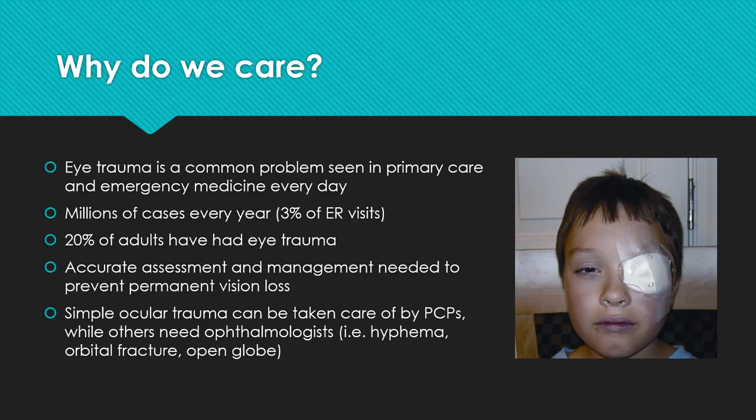To begin, I'd like to briefly discuss why this topic is so important. Eye trauma is very common and is seen in the primary care setting as well as in the emergency room every day. It composes up to 3% of ER visits annually, and up to one-fifth of adults in the United States will have had a history of eye trauma in their lifetime. Thus, being able to accurately assess and manage these patients, whether in the office or knowing when to submit a referral to an ophthalmologist, is paramount to prevent permanent vision loss.